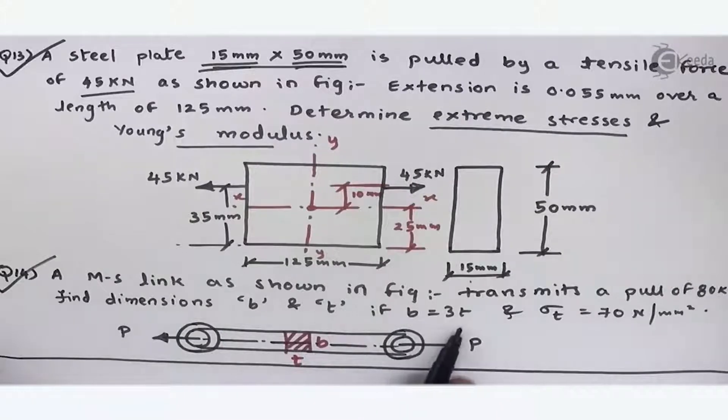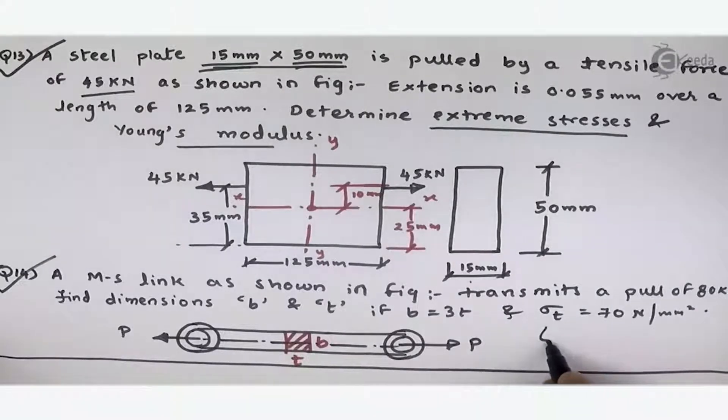If B is equal to 3T, and sigma T is 70 Newton per mm square. This sigma T is nothing but your bending stress, or you can say maximum stress.